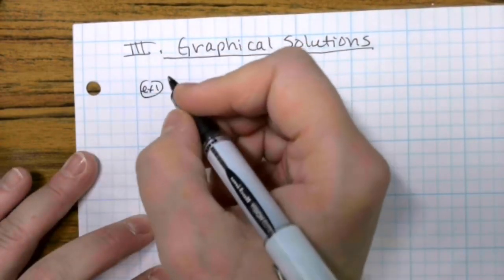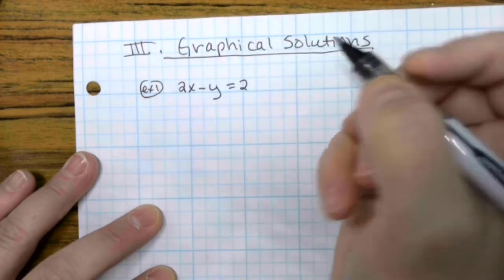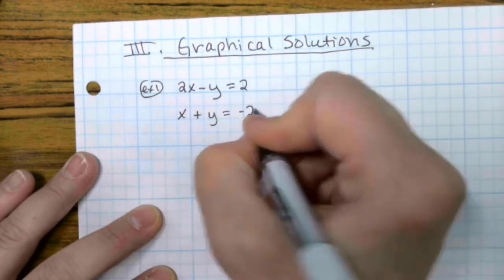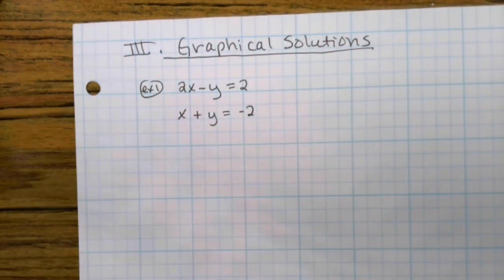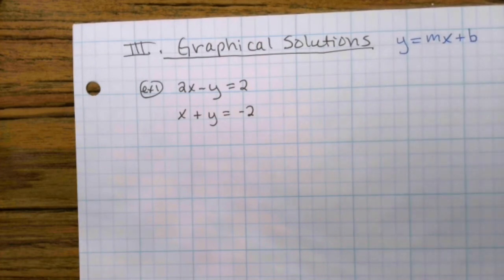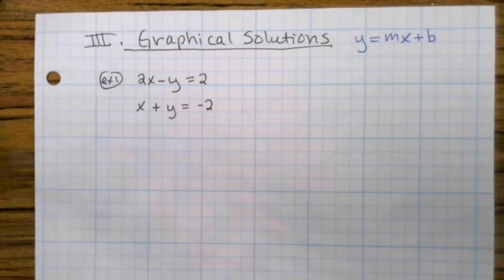Here's an example. The system is 2x minus y equals 2, x plus y equals negative 2. So of course, if we're going to take the time to graph this, you would want to solve for y. Put it into y equals mx plus b. Pick your three x values. Plot those. Use a straight edge. Draw a line through it. Same thing with the second one. Solve for y. Pick your x values. Calculate points and plot them and put a line through them.